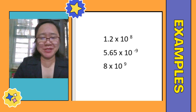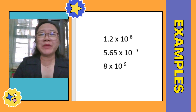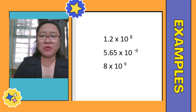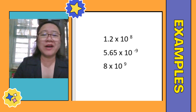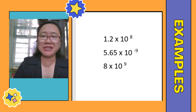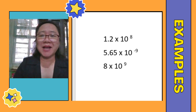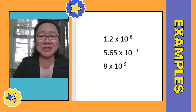Now, these are examples of scientific notation. For the first example, we have 1.2 × 10⁸. For the second one, we have 5.65 × 10⁸. For the third example, we have 8 × 10⁸. Isn't it easier to read? That's the beauty or the wonder of scientific notation.